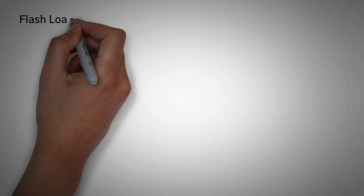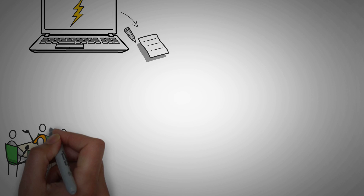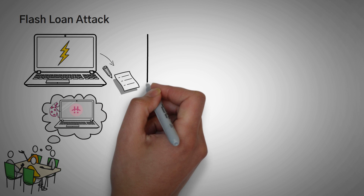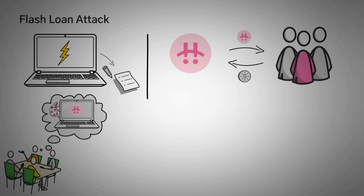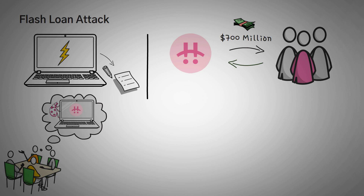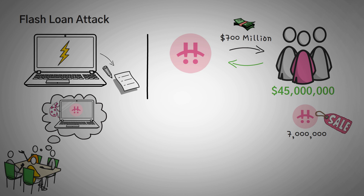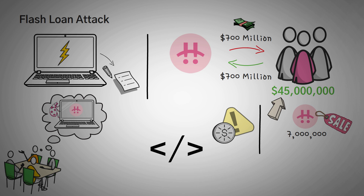The next important topic is flash loan attacks. Flash loans can be used to exploit vulnerabilities in certain smart contracts. For example, someone found a bug in the Pancake Bunny protocol — a yield farm that pays users in Pancake Bunny tokens. There was a bug that created a lot of Pancake Bunny tokens. The exploiters borrowed around $700 million, used it to exploit Pancake Bunny, minted 7 million Pancake Bunny tokens, immediately sold them earning $45 million, and then paid the original $700 million back in one transaction. Bugs and exploits in the code allow attackers to maximize those vulnerabilities using flash loans.